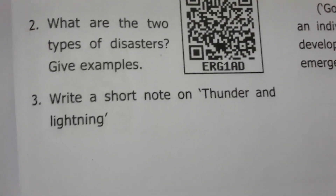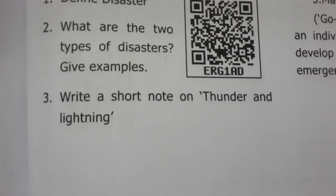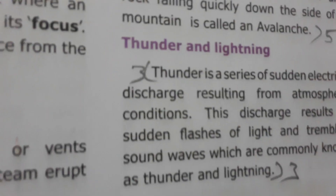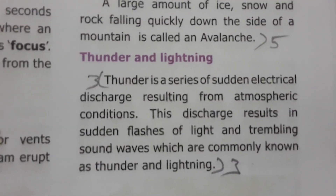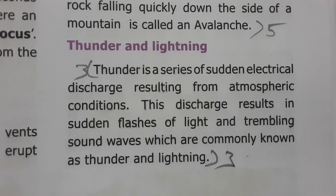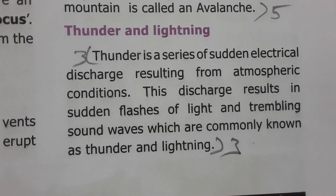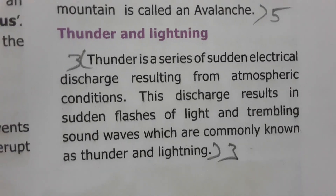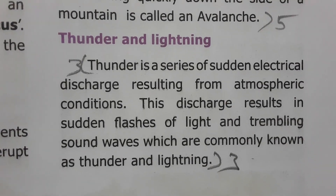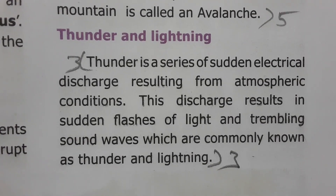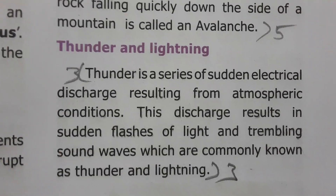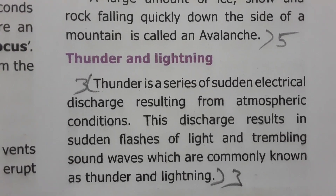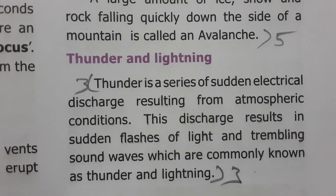Question 3: Write a short note on thunder and lightning. Thunder is a series of sudden electrical discharge resulting from atmospheric conditions. This discharge results in sudden flashes of light and trembling sound waves, which are commonly known as thunder and lightning.